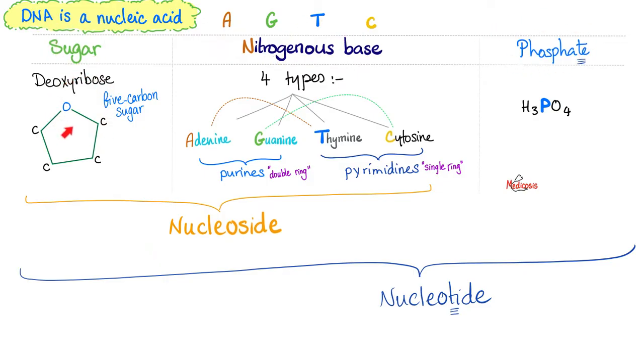But in RNA, it is ribose. Nitrogenous bases include adenine, guanine, thymine, cytosine. But in RNA, instead of saying thymine, we say uracil. Purines include adenine and guanine, and they have double rings. Thymine and cytosine are pyrimidines, and they have a singular ring. Sugar plus base equals nucleoside. Sugar plus base plus phosphate equals nucleotide. Mnemonic, nucleotide has phosphate. Nucleotide is the trio, the three things.